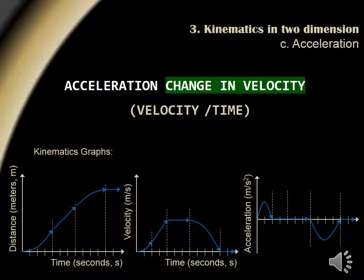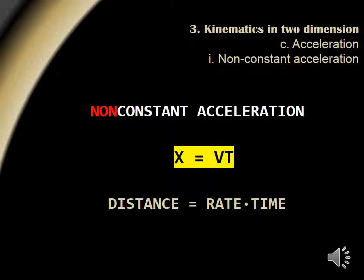The following diagram is a classic graphic representation of distance, velocity, and acceleration. The area under the acceleration versus time graph indicates a change in velocity. The area under the velocity versus time graph indicates displacement. The area under the position versus time graph represents no useful quantity. The equation of interest when dealing with non-constant acceleration problems is x equals vt, or distance equals rate times time.